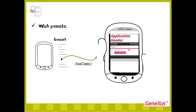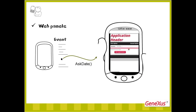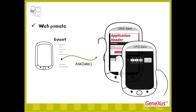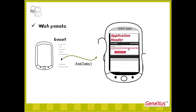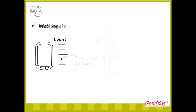It is also possible to invoke a web panel, that is, a panel of the web application, which displays and allows the entry of data for that type of application, just like the panel for smart devices. For instance, here we invoke the web panel called AskDate. It will be open in the device's browser, with a hidden frame so that it appears more like the rest of the application. In which other way could we execute a web object other than through a web browser?